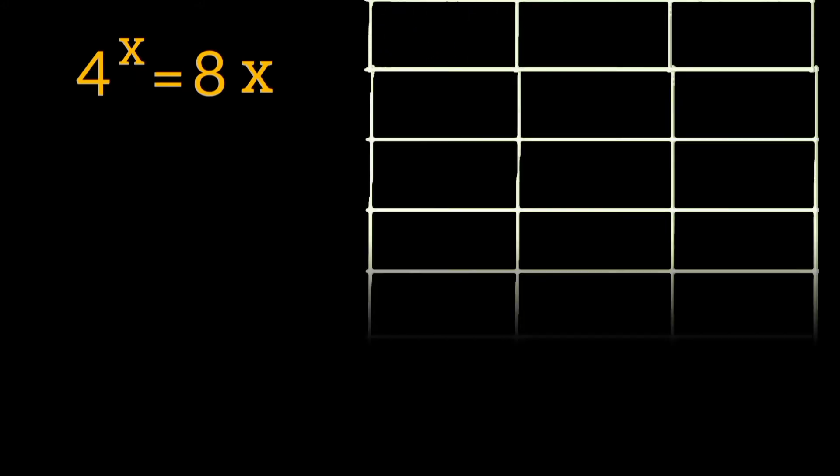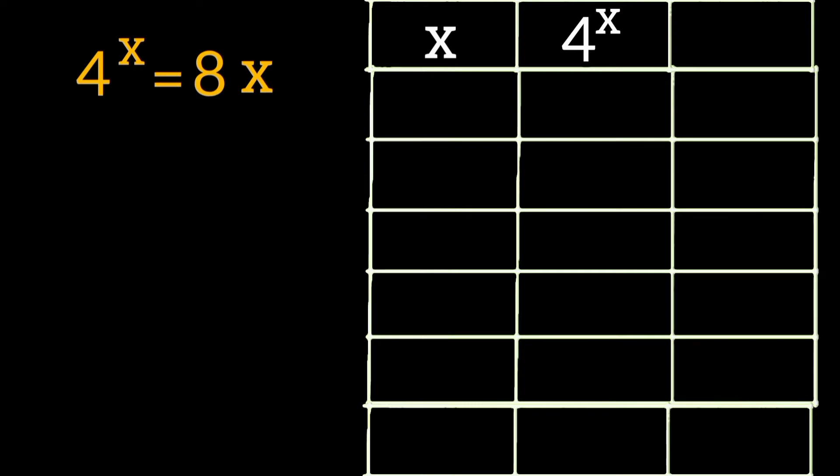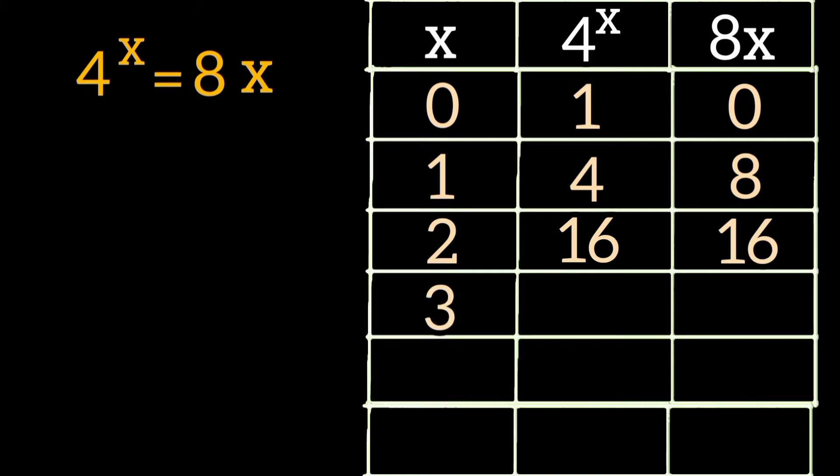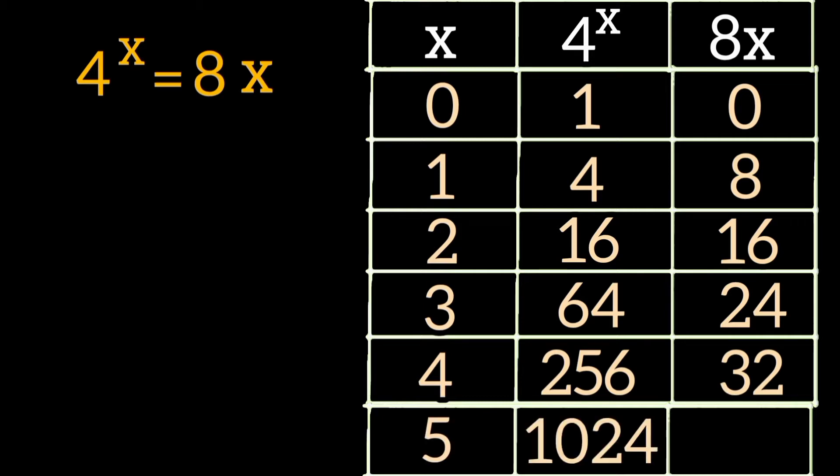Here's how the table looks: x will be here, 4^x will be here, and 8x will be here. When x is 0, 4^x is 1 and 8x is 0. When x is 1, 4^x is 4 and 8x is 8. When x is 2, 4^x is 16 and 8x is 16. When x is 3, 4^x is 64 and 8x is 24. When x is 4, 4^x is 256 and 8x is 32. Finally, when x is 5, 4^x is 1024 while 8x is 40.